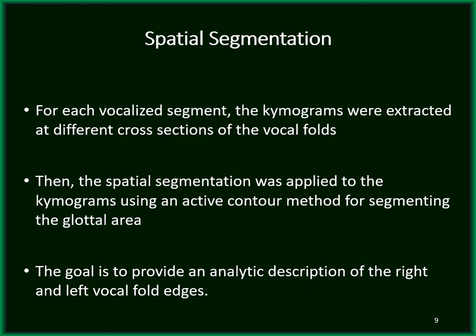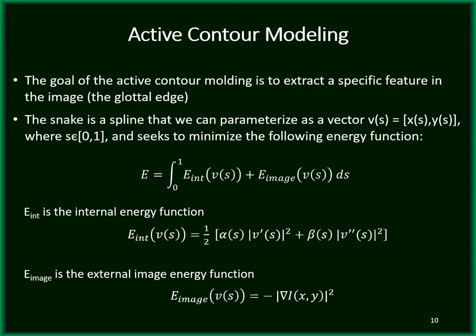We extract the kymograms at different cross-sections of the vocal folds for each vocalized segment during running speech. Next, spatial segmentation is applied to each kymogram using an active contour method to segment the glottal area. The goal of the active contour modeling technique is to extract a specific feature in the image — in this work, the feature we are seeking is the glottal edge. To do so, we draw a line or active contour, also called a snake, close to the edge we want to detect.